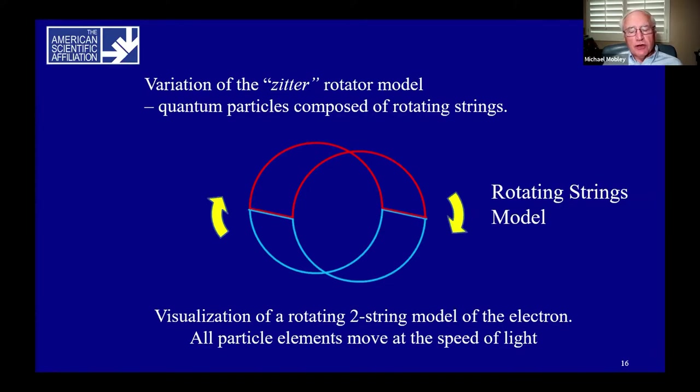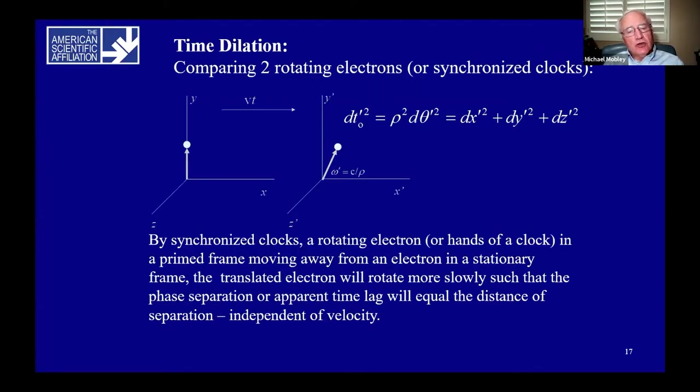The rigid rotor is the simplest zitter model, but I don't want to leave you with an incomplete understanding of the potential of the zitter model. Here, I present a variation of that model where the electron is composed of two rotating strings that draws upon insights from modern string theory. These particles are embedded within a web of strings. Again, using the equations of special relativity, we can compare the rotation of two electrons in relative motion or even the motion of clocks.